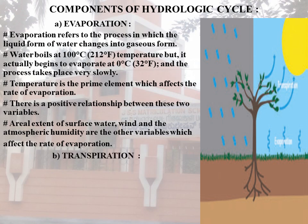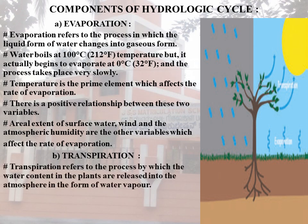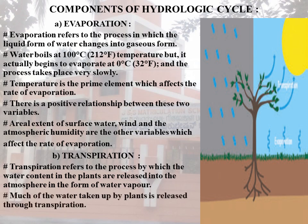The next is transpiration. Transpiration refers to the process by which the water content in plants is released into the atmosphere in the form of water vapor. Much of the water taken up by plants is released through transpiration. The rate of transpiration is also affected by temperature, wind, humidity, the nature of vegetation, and the method of cultivation of crops.